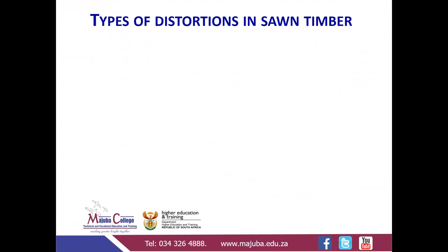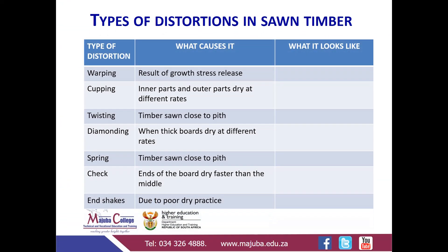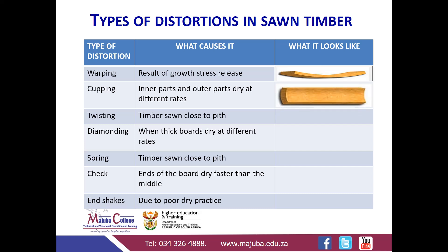The types of distortions in timber — we're going to discuss these as they appear in your textbook. The first one will be bowing, which is caused as a result of growth stress release. Your timber will deform into this shape. Cupping: the inner part and outer part dry at different rates, and it looks like that.